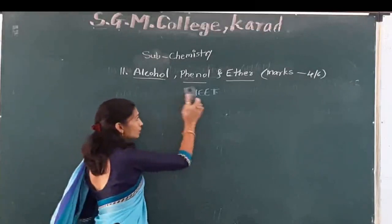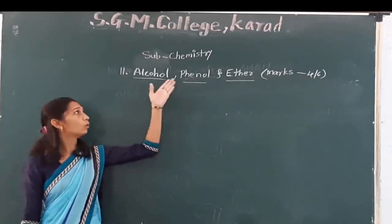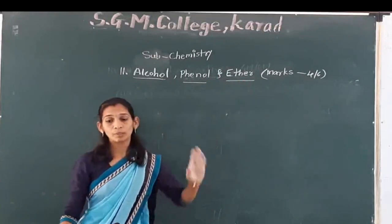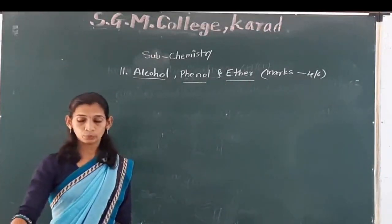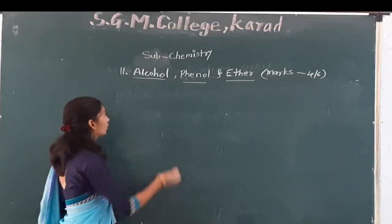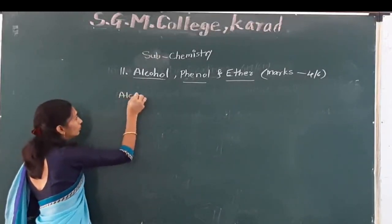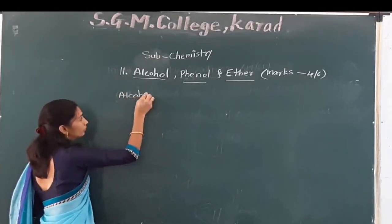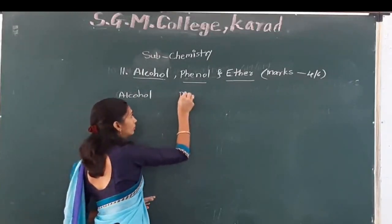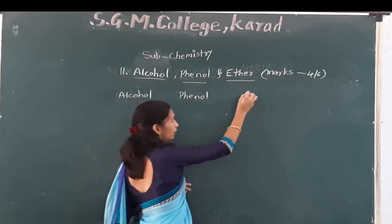In eleventh class you studied the basic concept of alcohol, basic concept of phenol, and basic concept of ether. Now we will study this chapter in depth. First alcohol, second phenol and ether.